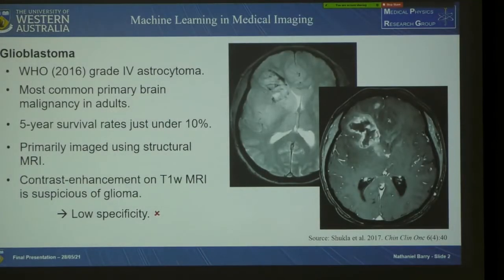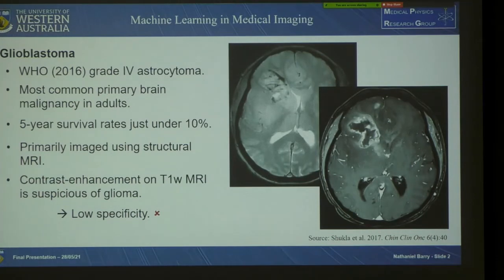Glioblastoma is a World Health Organization grade 4 astrocytoma and it's the most common primary brain malignancy in adults, with five-year survival rates at just under 10% for those who undergo a maximal tumour resection followed by radiotherapy with concomitant and adjuvant temozolomide. It's primarily imaged using structural MRI, with contrast enhancement on T1-weighted MRI often suspicious of glioma, but this tends to suffer from low specificity in identifying non-neoplastic lesions.